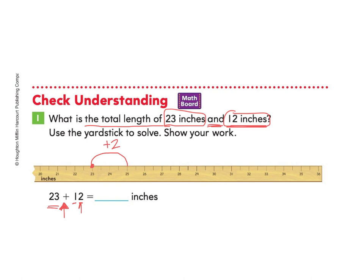Now I need to add the tens. So I need to add 10 to this number. I go all the way over and add 10 and land here, plus 10, which leaves me at this number 35. So I can answer that 23 plus 12 equals 35 inches. Great job.